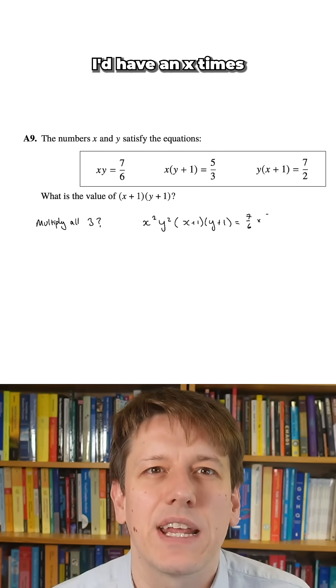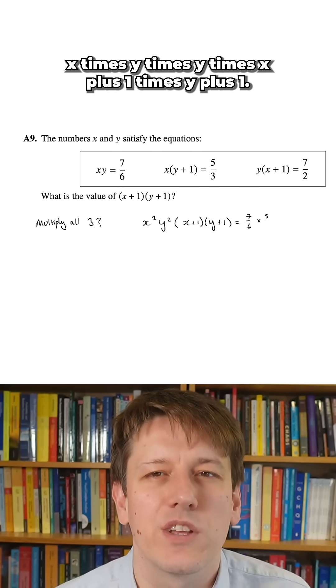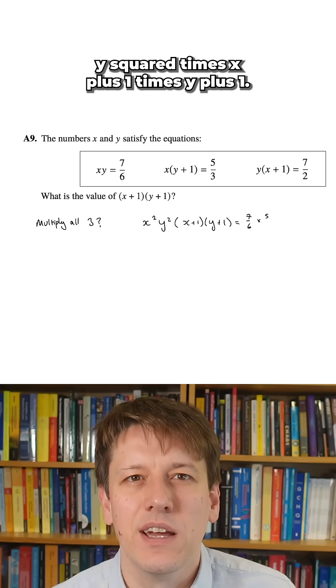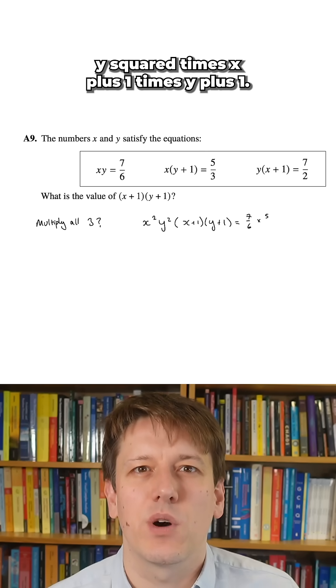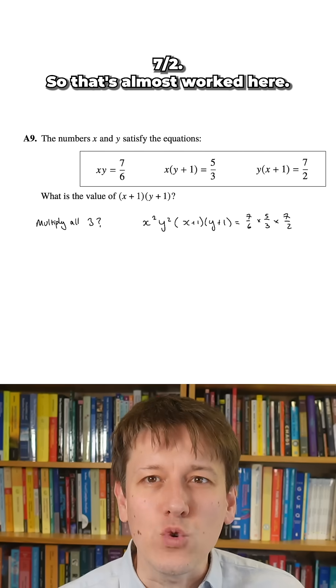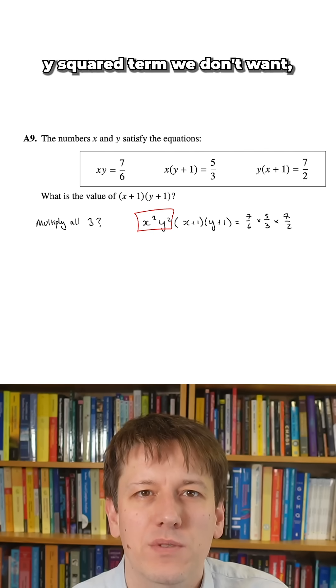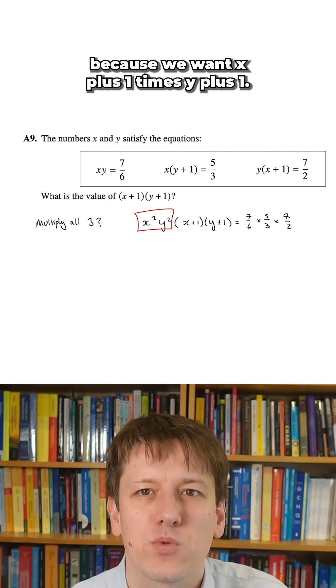Now if I multiplied them all together, I'd have x times x times y times y times (x+1) times (y+1). So I'd end up with x² times y² times (x+1)(y+1), that would be 7/6 times 5/3 times 7/2. So that's almost worked, apart from the fact we've got the x²y² term we don't want.